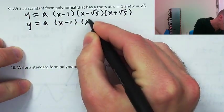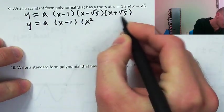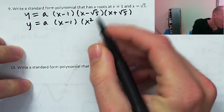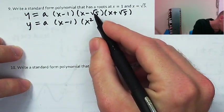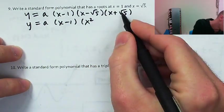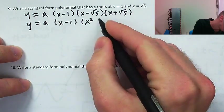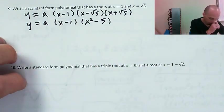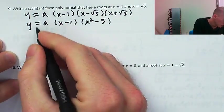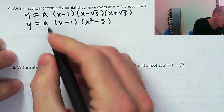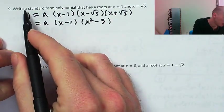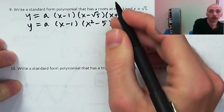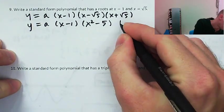This will be x squared minus root 5x plus root 5x — those add away — and then minus square root of 5 times positive square root of 5, that'll just be minus 5. Since we just need any standard form polynomial, I'm going to let a equal 1.